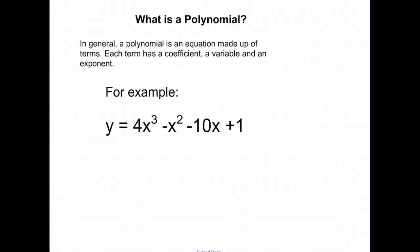Today, we're going to be talking about what is a polynomial. In general, a polynomial is an equation made up of terms. Each term has a coefficient, a variable, and an exponent. So, for example, on the board here, we have a polynomial.